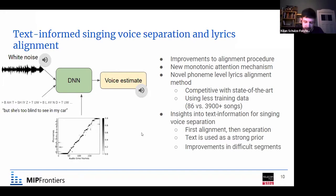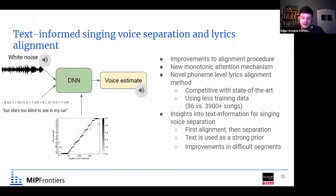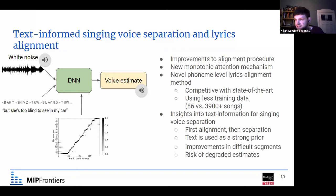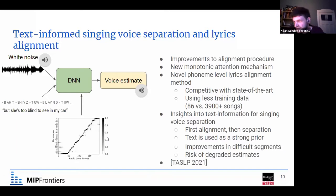We could show that this improves general singing voice separation, especially in challenging segments. For example, sounds like S or SH may spectrally look similar to loud cymbals in the drums, which is challenging to separate from the singing voice — and text helps a lot here. However, since the estimate is quite strongly dependent on the text input, mistakes in the transcription, translation to phonemes, or alignment also risk degrading the voice estimate. These observations — covering both the separation part and the alignment part — led to a third publication in a journal paper.